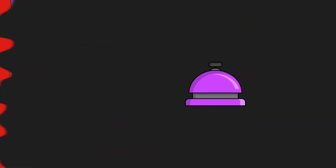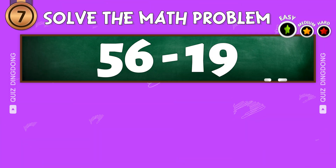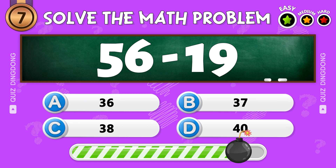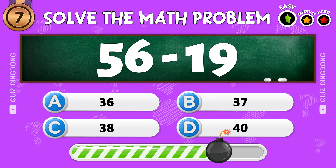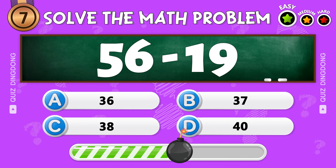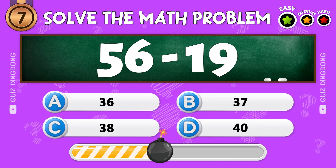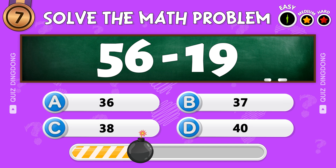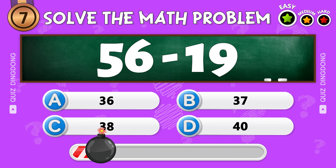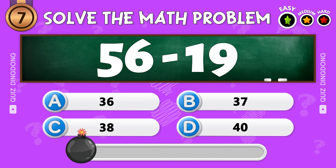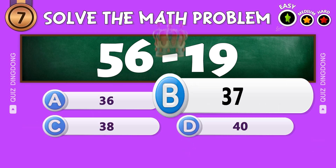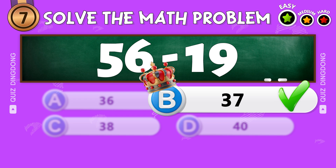What's next? Solve this! What's 56 minus 19? Spot on! The answer is 37.